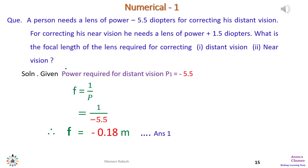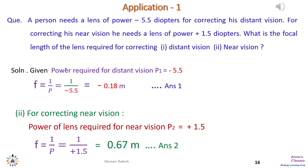The power of the lens for distant vision correction is −5.5 diopters. Using the formula f = 1/P, putting P = −5.5, we get f = 1/(−5.5), which gives f = −0.18 meters. Similarly for near vision, the power is +1.5 diopters. Using f = 1/P = 1/1.5, we get f = 0.67 meters. So for correcting near vision we need a focal length of 0.67 m, and for distant vision the person requires −0.18 m.